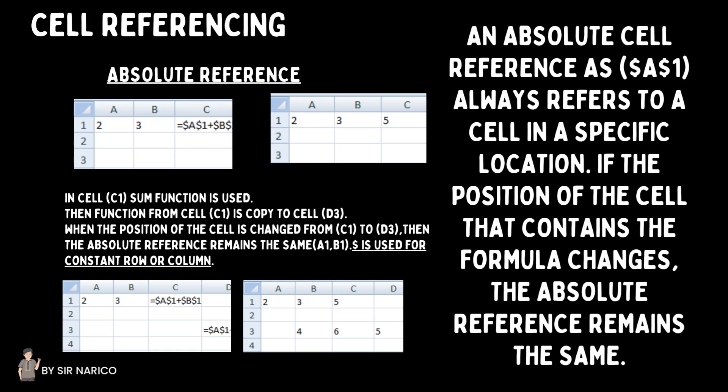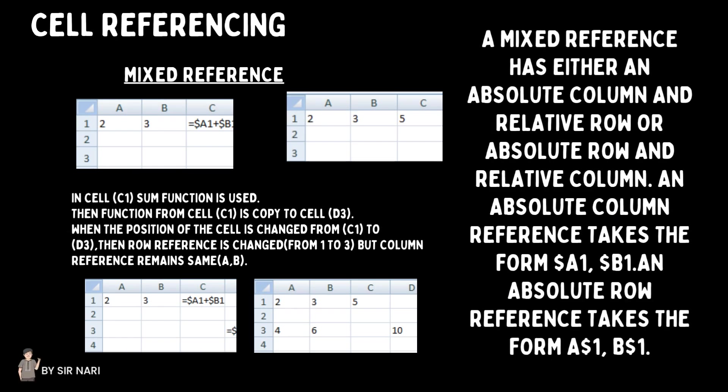The $ sign is used for a constant row or column. A mixed reference has either an absolute column and relative row, or an absolute row and relative column. An absolute column reference takes the form $B1, and an absolute row reference takes the form B$1. When the position of the cell is changed from C1 to D3, the row reference changes from 1 to 3, but the column reference remains the same.